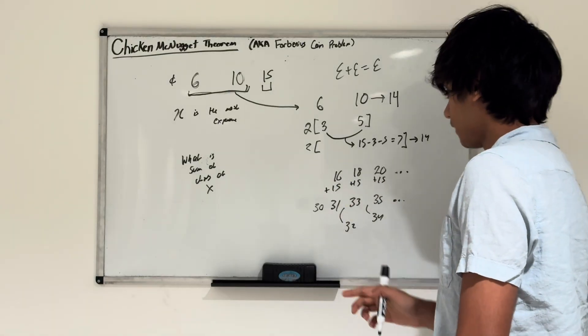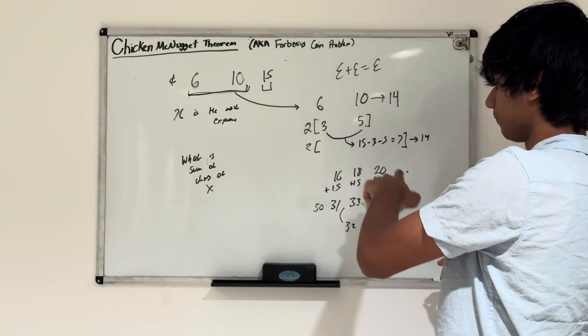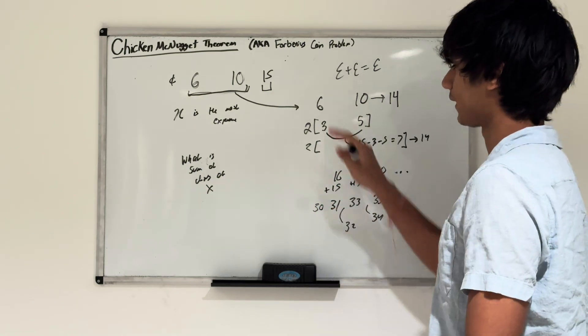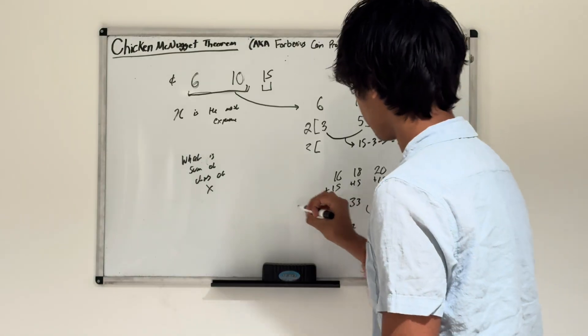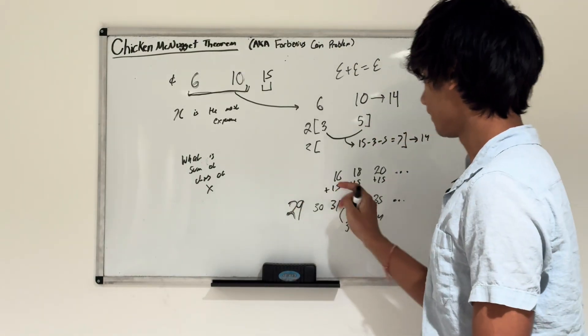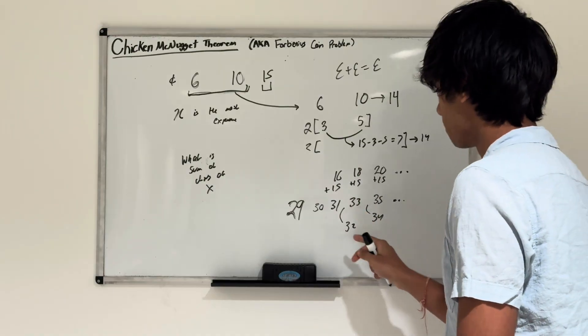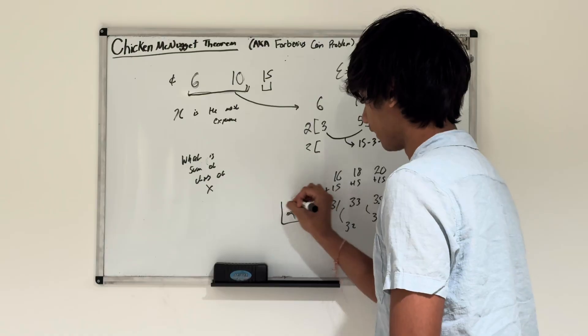But the issue is we cannot make odd numbers before 31 because we can only add 15. Therefore, the largest number has to be 29. We can make 28 and even numbers above 16, but we can only make odd numbers above 31. So the largest number has to be 29.